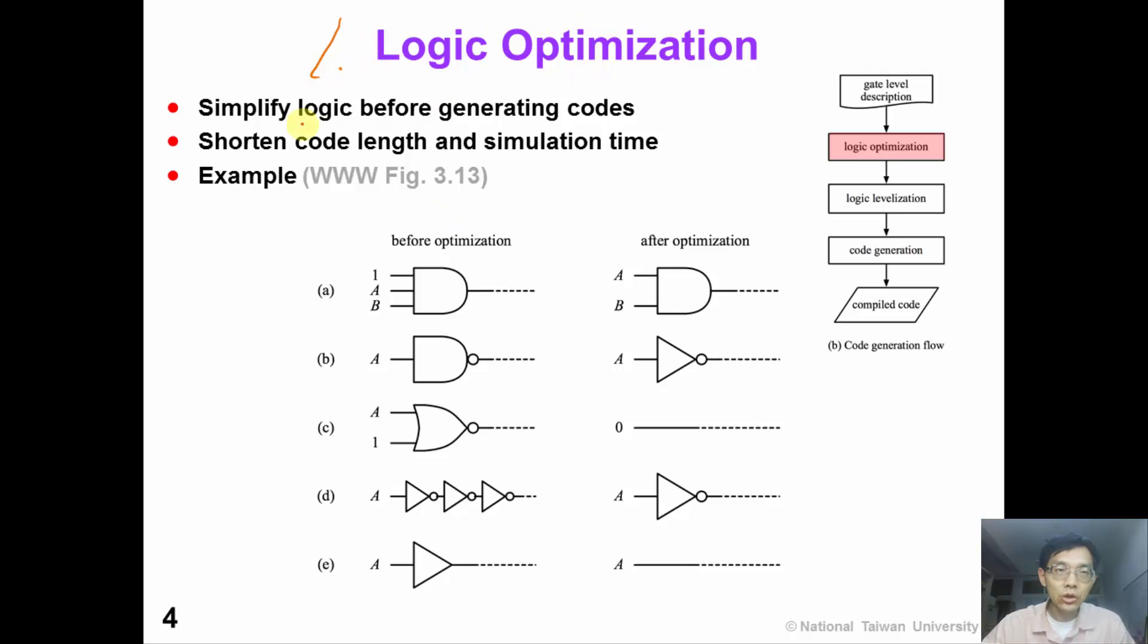First, logic optimization simplifies our circuit before we generate the code. If we can simplify the logic, we can shorten the runtime. For example, suppose we have a three input AND gate with this input tied to 1. We can simply remove this input. So we have a two input AND gate.